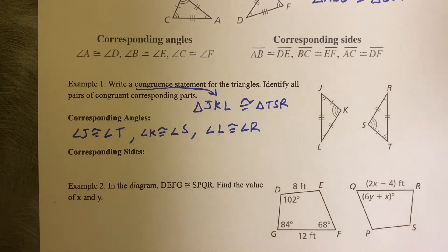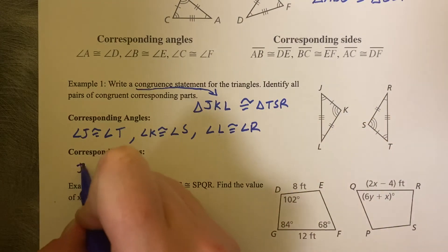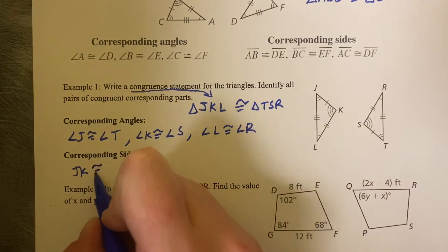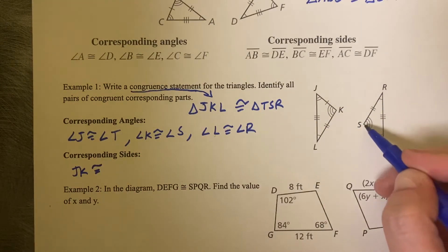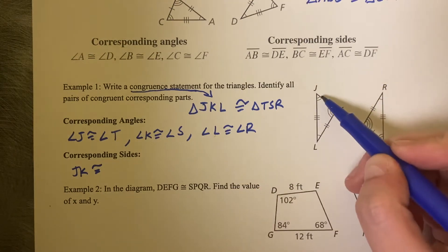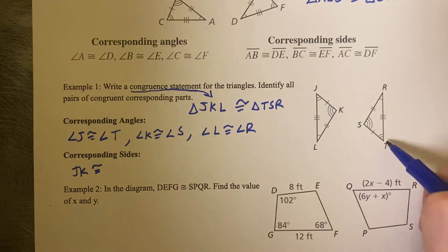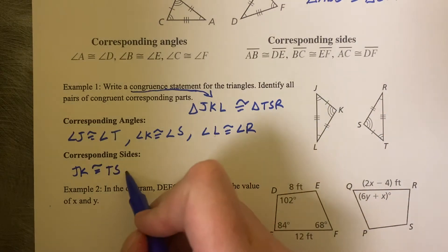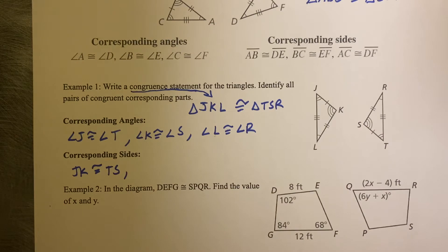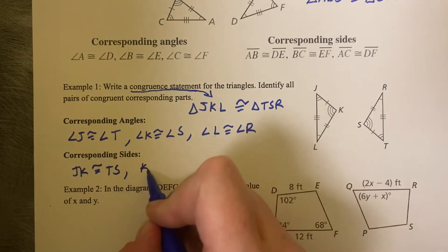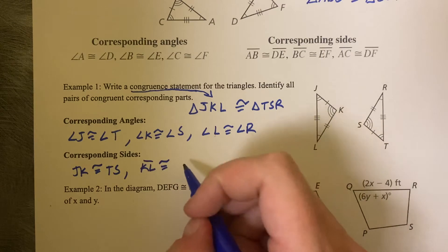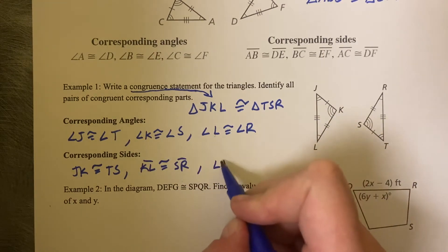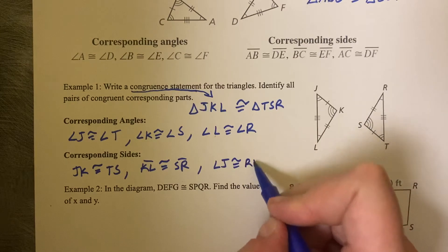Now we do the same thing with the sides. We look at the tick marks though, so JK, this one tick mark, is congruent to ST. We want to go in the same direction, so if I say JK from the two to the three, I want to go the same direction, so TS is the appropriate direction. Be careful about that on your homework, make sure you go in the right direction. KL is congruent to SR, and LJ is congruent to RT.